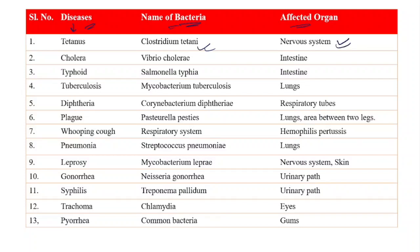Number one: Tetanus is caused because of Clostridium tetani and it affects the nervous system. Number two: Cholera is caused because of Vibrio cholerae and it affects the intestine. Cholera and Typhoid are caused through dirty water. In the case of Typhoid, Salmonella typhi is the bacteria and it affects the intestine. Number four: Tuberculosis — we call it TB — is caused by Mycobacterium tuberculosis and the affected organ is the lungs.